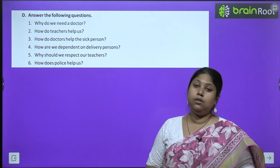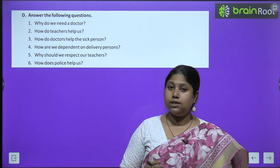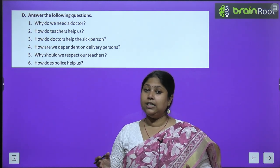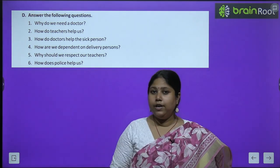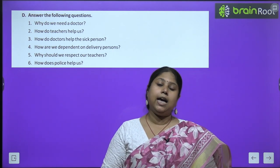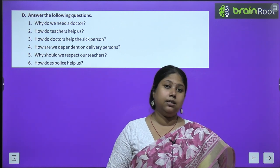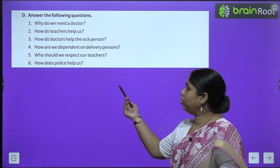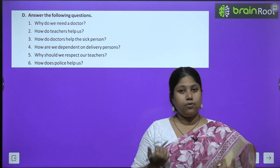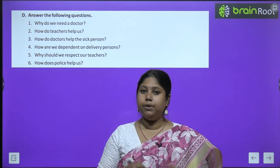Fourth: how are we dependent on delivery persons? We are dependent on delivery persons because they help to deliver different kinds of products and goods to our doorstep. A delivery person saves our time and makes our life more efficient, easy, and manageable. Fifth: why should we respect our teachers? We should respect our teachers because they not only teach us to read and write, but they also shape our character, help us to grow in life, and make us understand what is right and wrong, so we should be grateful and thankful. Sixth: how does police help us? Police helps us to maintain law and order in the city, and also protects us and our property.